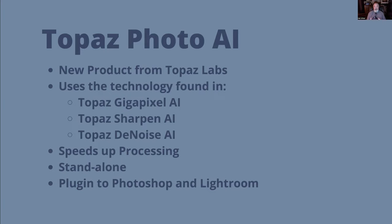So what is Photo AI? It integrates those three technologies — Gigapixel, Sharpen, and Denoise — into one tool. The separate applications will have more models and fine-tuning features, so there may be some images where you'd want to use those independent tools. But Photo AI combines all three into one app, really speeds up your processing. I've been using it for several weeks and it's just really cool — it works for most of the images I'm using.